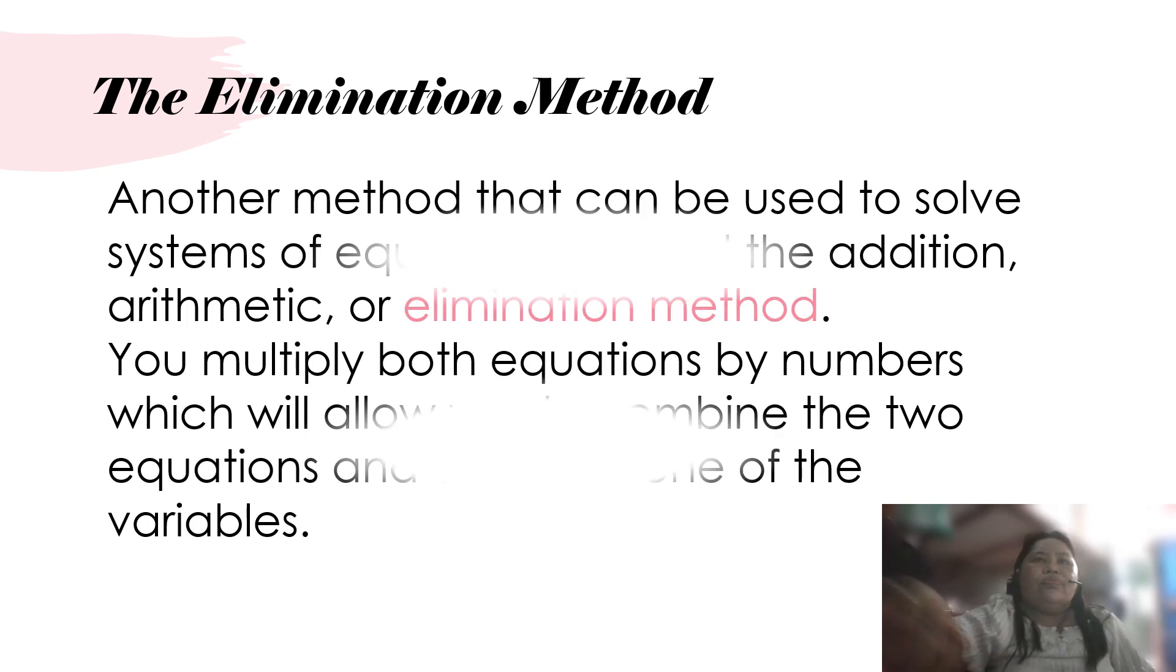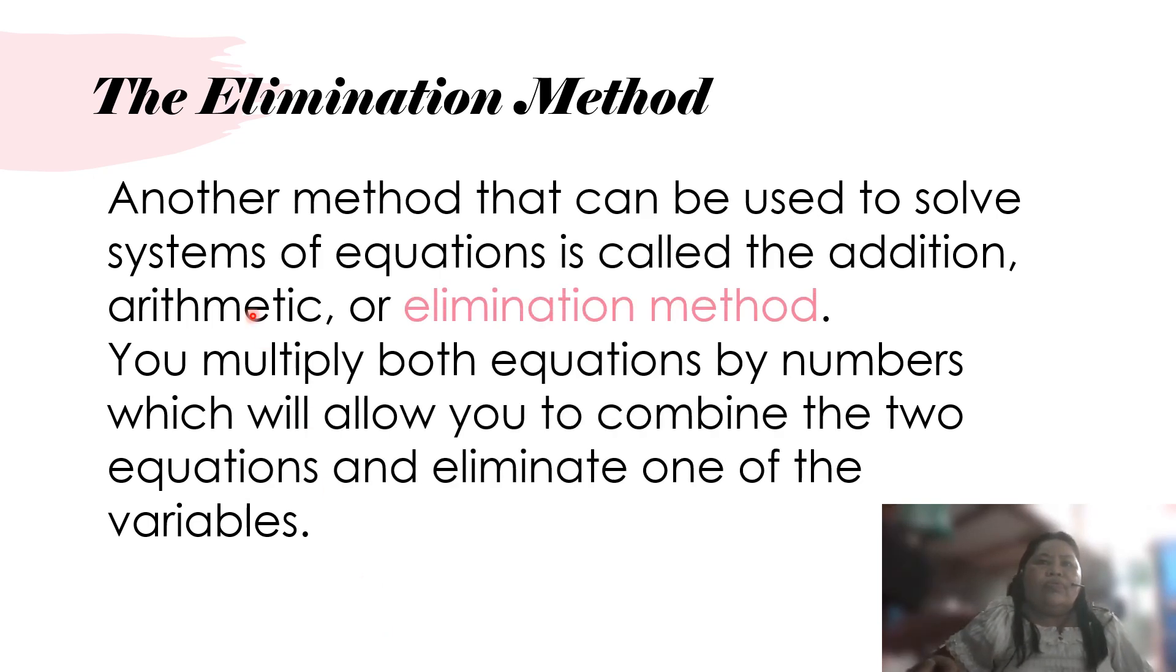The elimination method. Another method that can be used to solve the system of equations is called the addition, arithmetic, or elimination method. You multiply both equations by numbers which will allow you to combine the two equations and eliminate one of the variables.